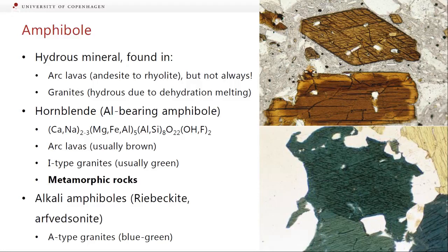Next we have amphibole — one of our hydrous minerals. You find it in arc lavas, generally andesite or more evolved, so andesite to rhyolite, but it's not always there. It's not a key component of andesite — something can still be an andesite if it has no amphibole.